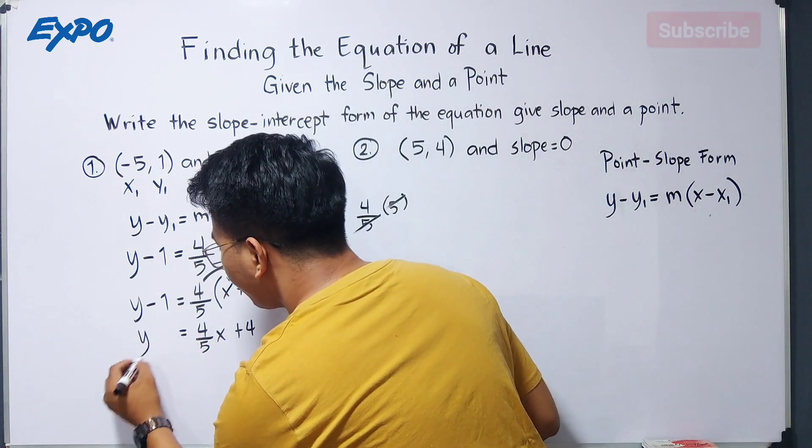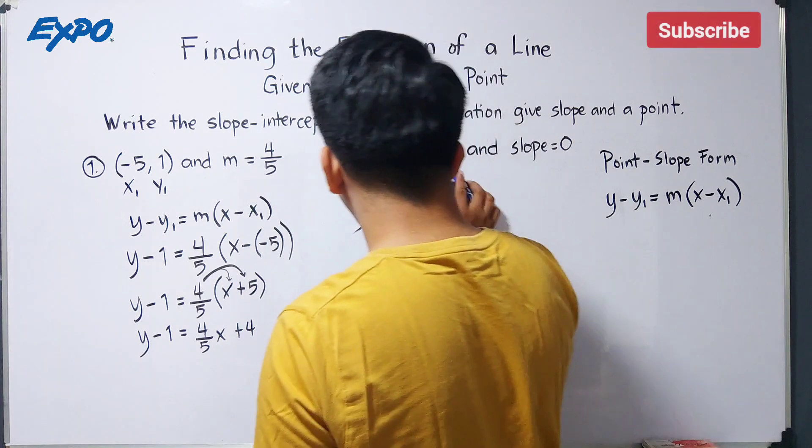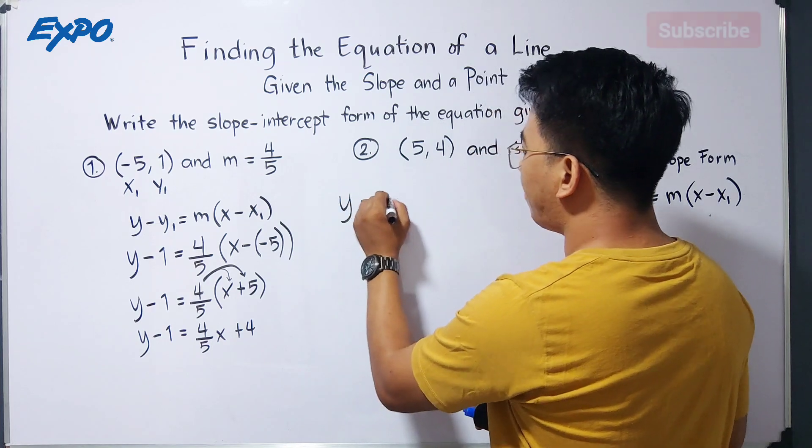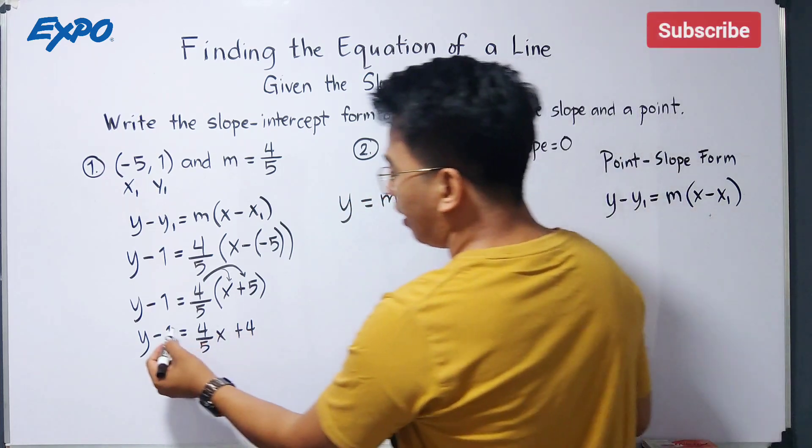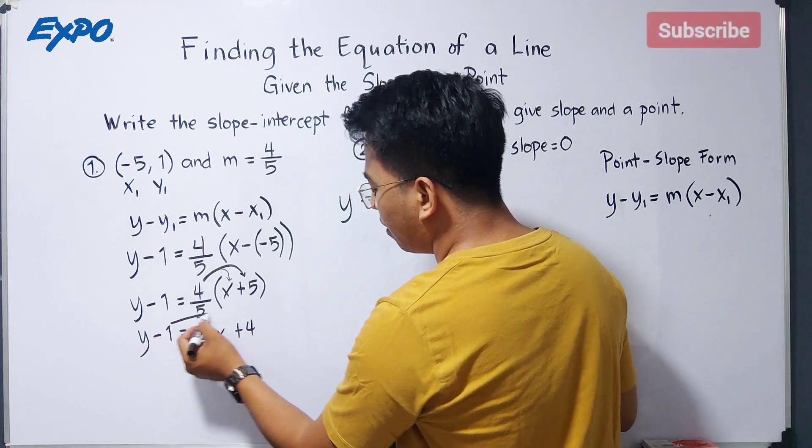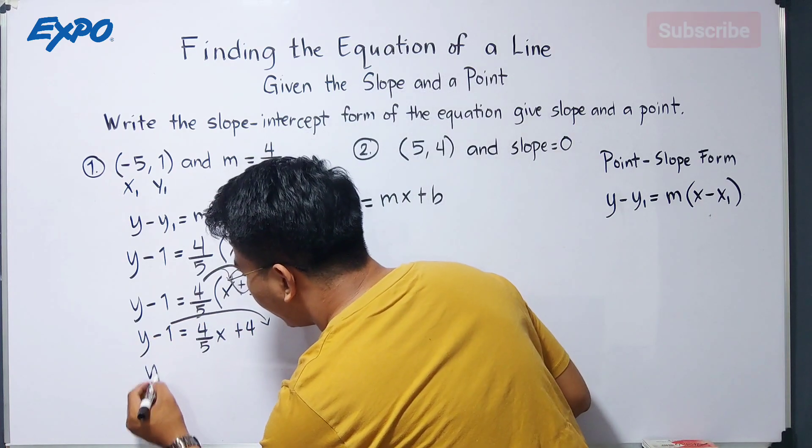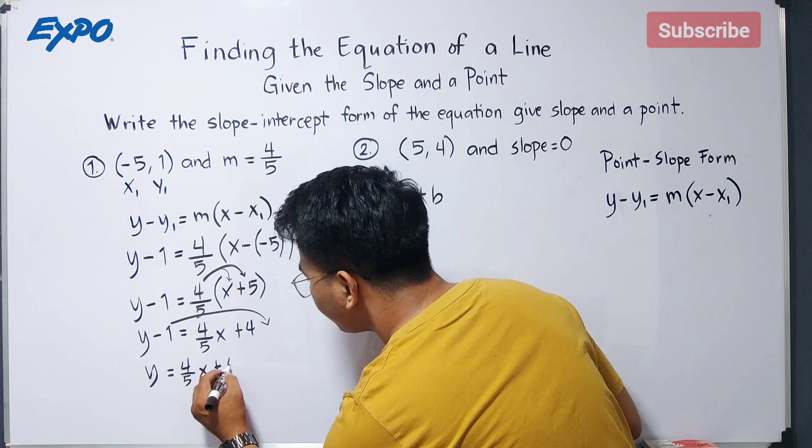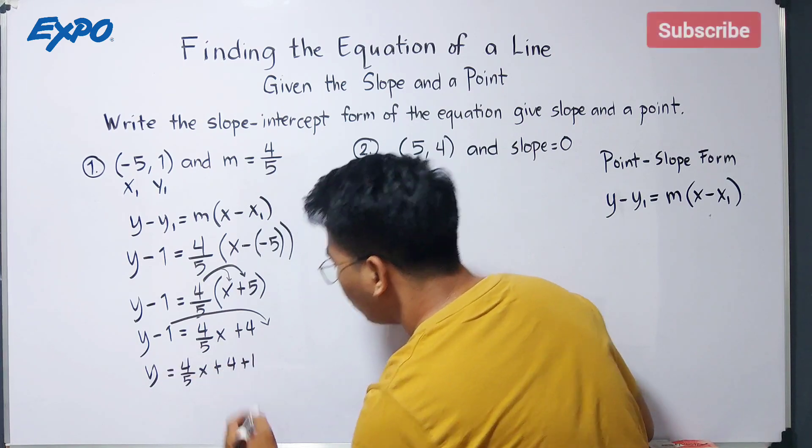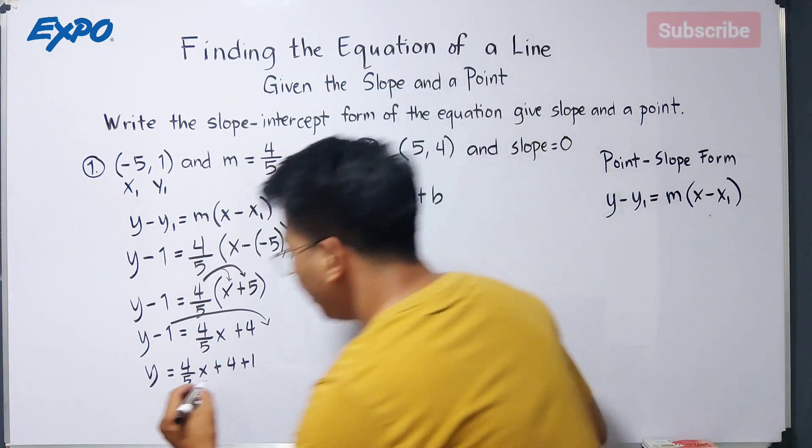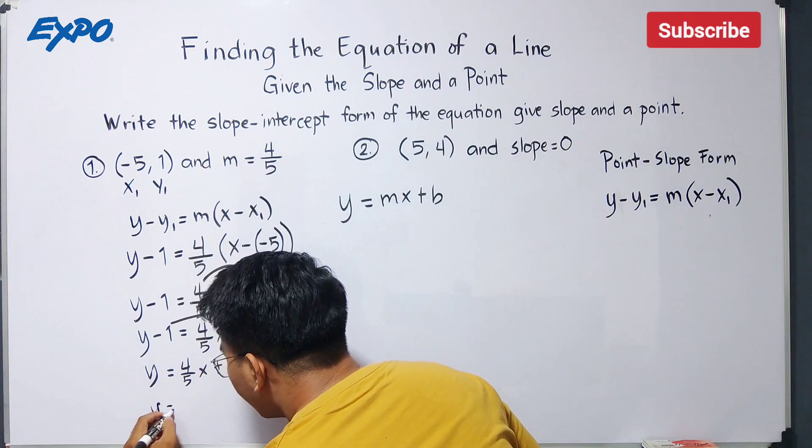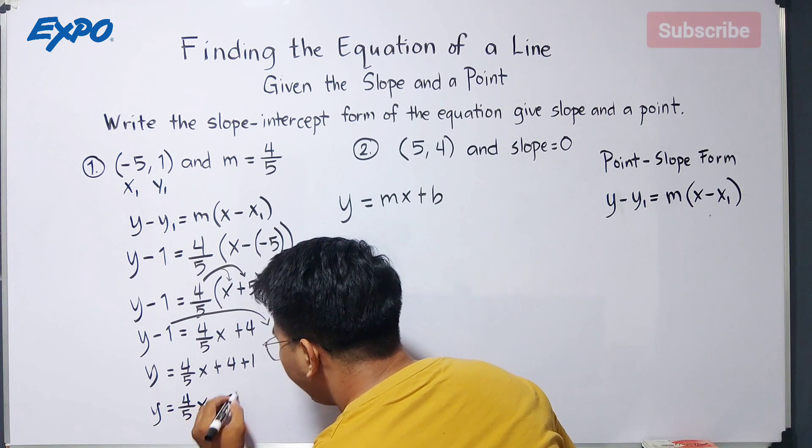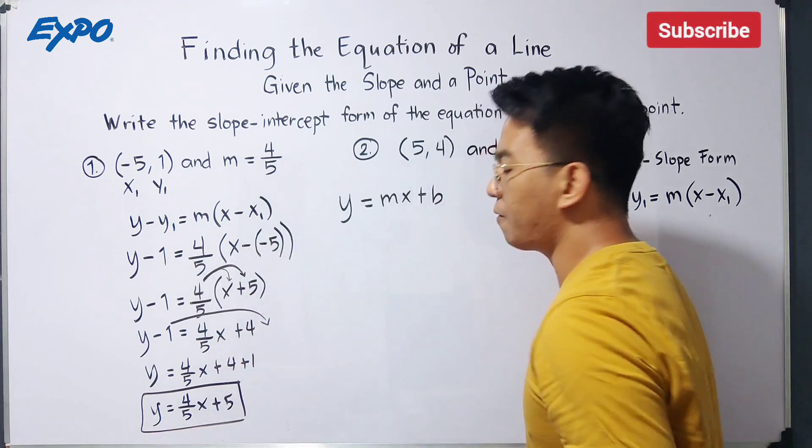So we have y minus 1. And then, to finalize our answer, because the target is to become y is equal to mx plus b, we will eliminate this one or we will transpose this to the other side of the equation. It will become y is equal to 4 over 5x, then plus 4 plus 1. And to finalize our answer, this is y is equal to 4 over 5x plus 5. And this is the answer for item number 1.